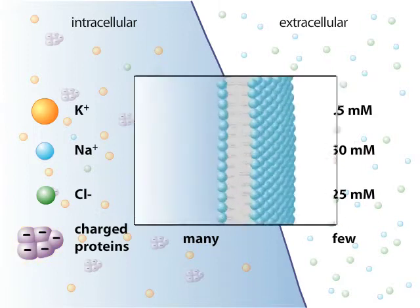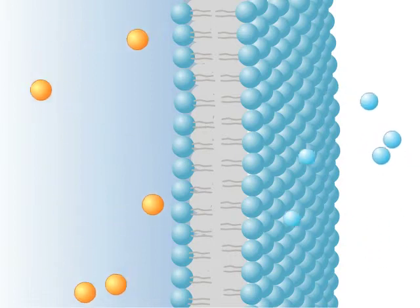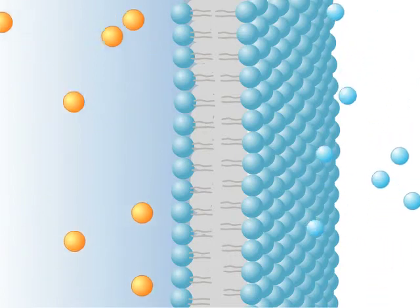The plasma membrane is composed of a lipid bilayer. Its hydrophobic nature prevents the diffusion of ions across the membrane.